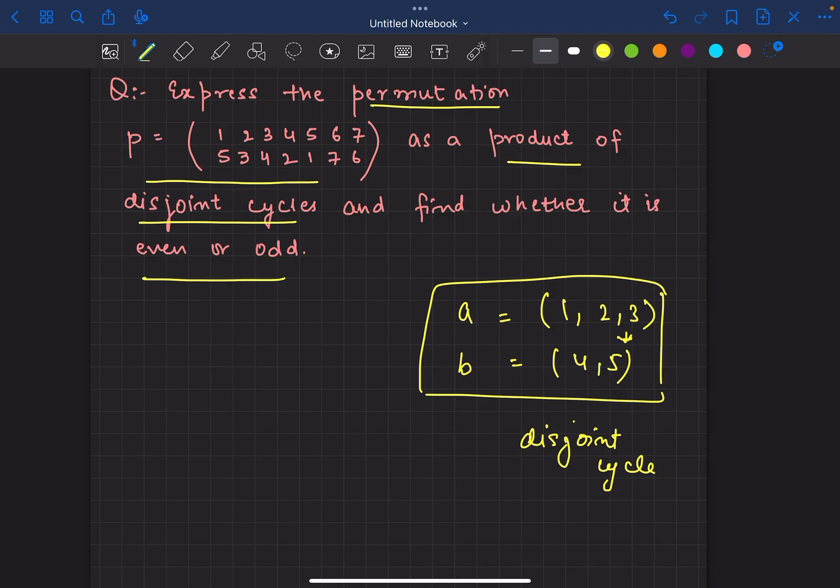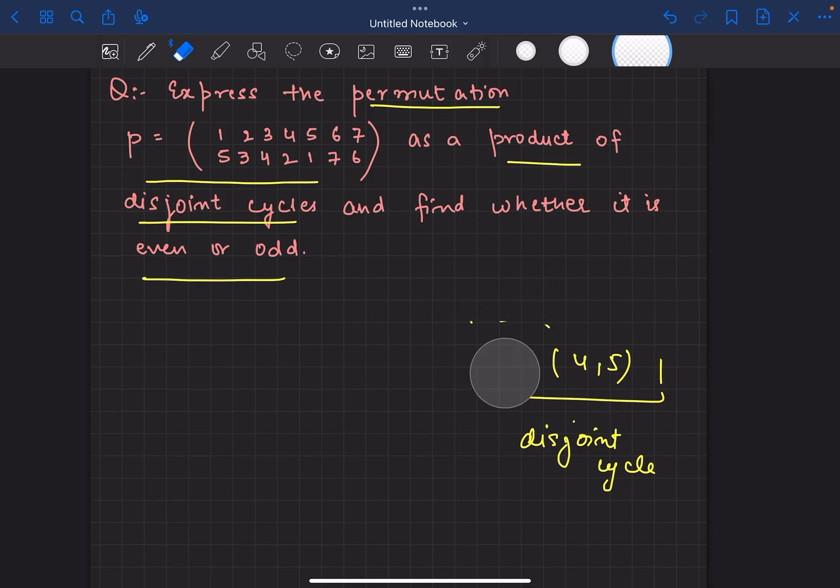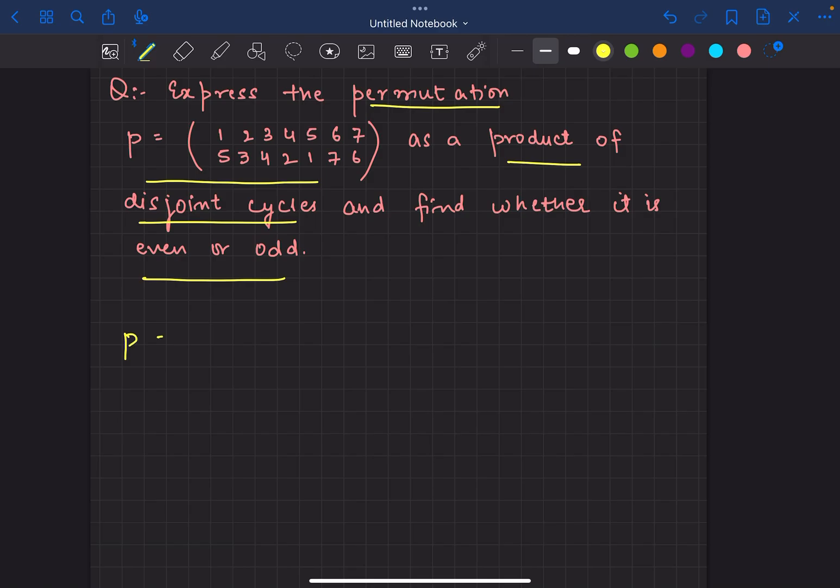So how can I write this permutation? If we have to write it as a cycle, then 1 is going to 5, 5 is going to 1. Then 2 is going to 3, and 3 is going to 4. 2 is going to 2.